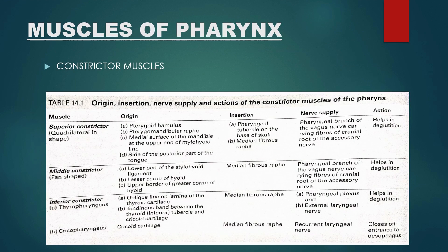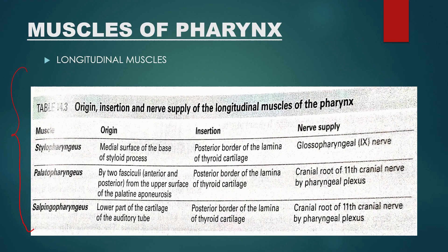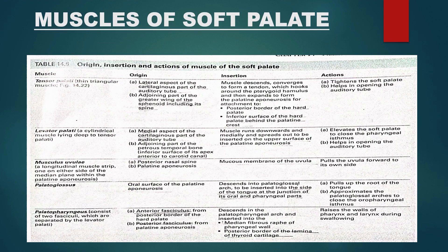Moving ahead, we have the muscles of the pharynx. In the pharynx and soft palate, the most frequently asked portion is the muscles. There are two major types: the constrictor muscles and the longitudinal muscles. For constrictor muscles — same as muscles of tongue — we cover origin, insertion, nerve supply, and action. Go through this chart properly. Similarly, we have the chart for longitudinal muscles. Moving ahead, we have the muscles of soft palate, which can also be asked during your practicals, so learn it thoroughly.